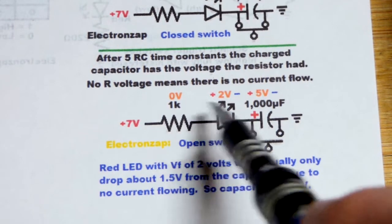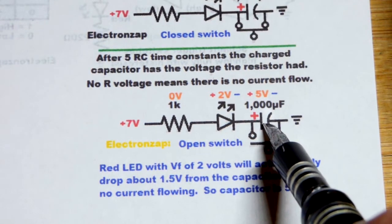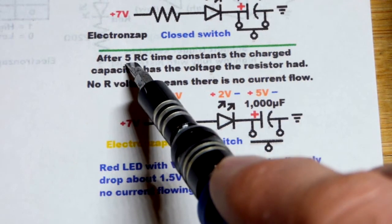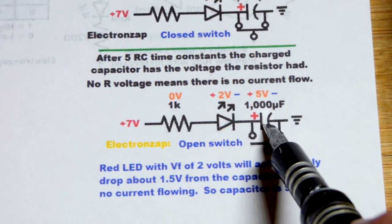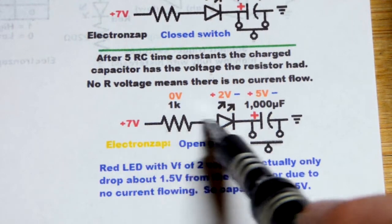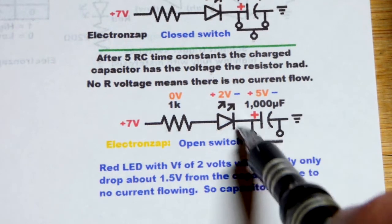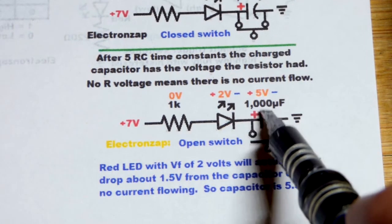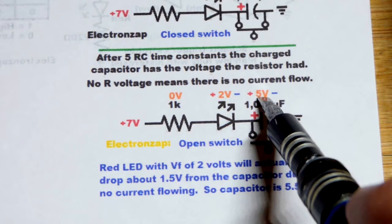1,000 times one one thousandth is one. So that'll be one second. That number is in seconds. And it takes five of those. So five seconds for the capacitor to go from fully discharged to fully charged when charged through a resistor. When we close the jumper, we'll have an instant discharge because there's no resistance. It's going to take about five seconds to get to about five volts.